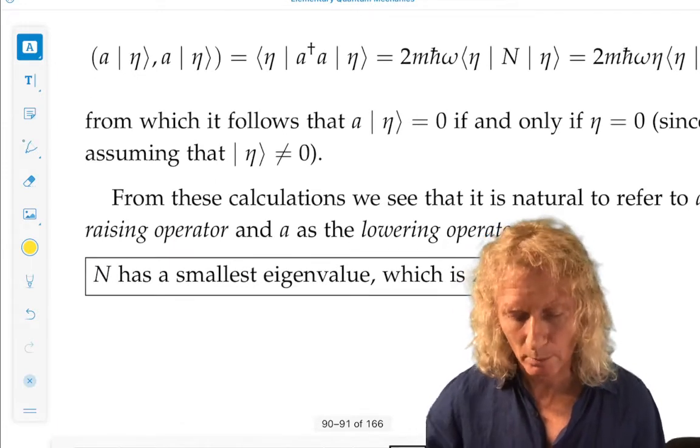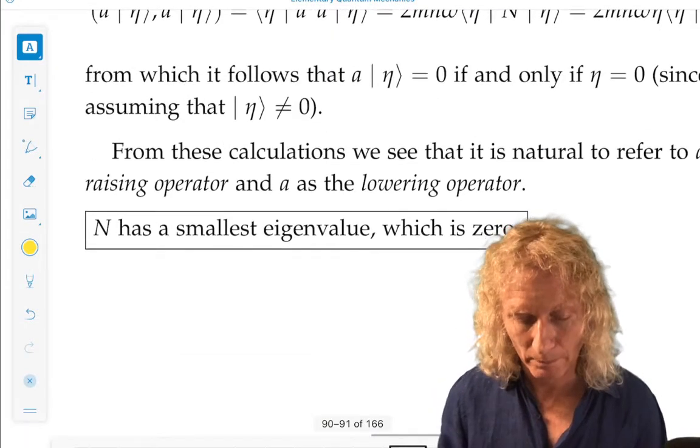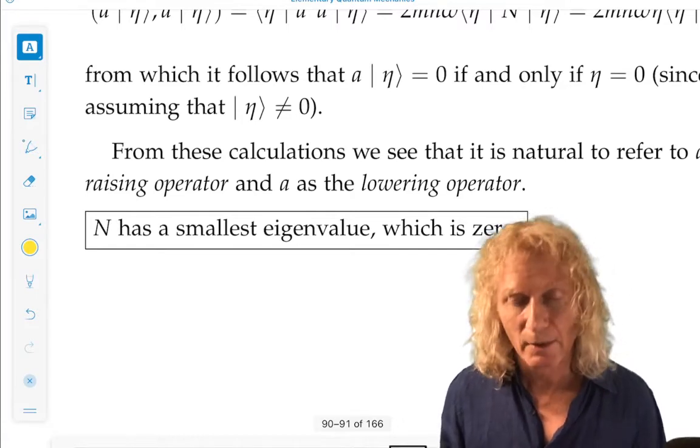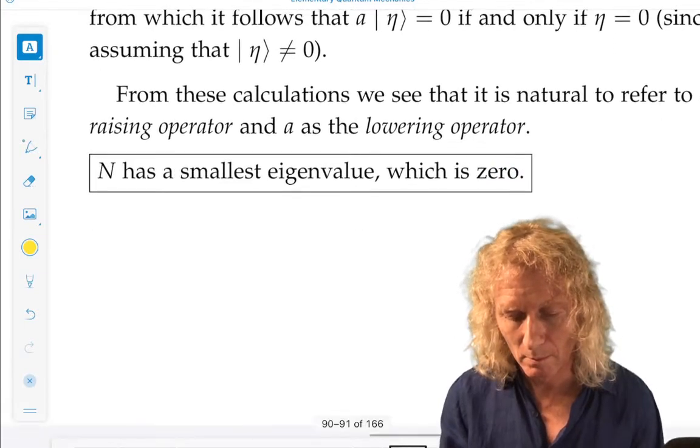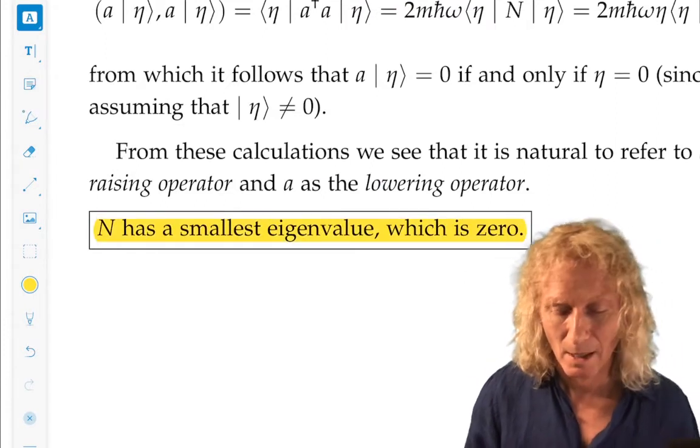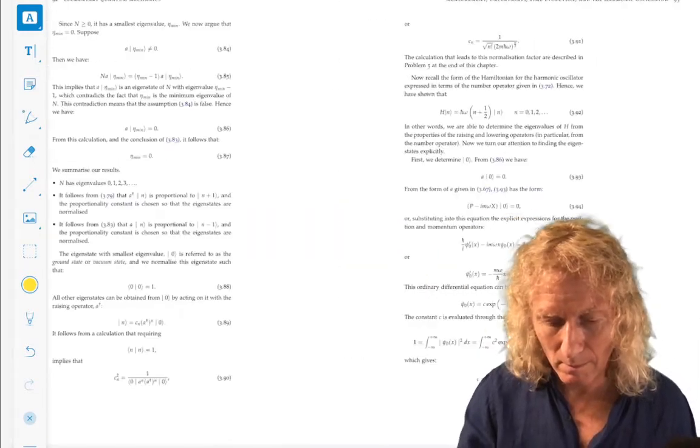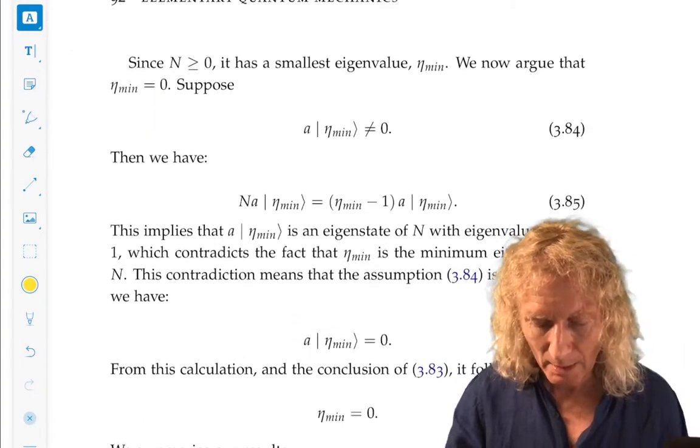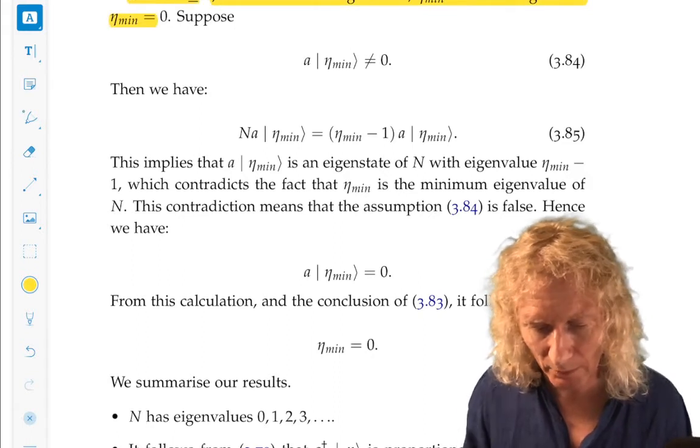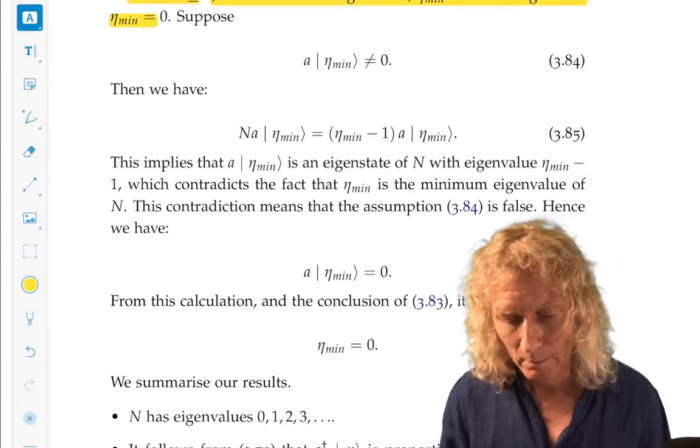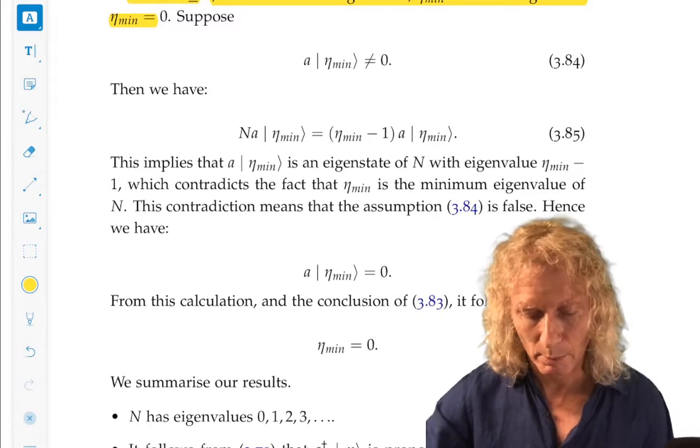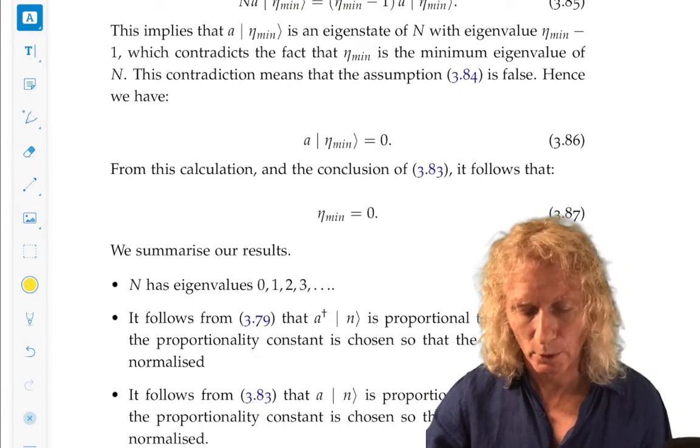Now, the last crucial piece, and then we have a nice story, is that the number operator, we know it's positive, it's greater than or equal to zero, but it has a smallest eigenvalue, which happens to be zero. That's a little proof by contradiction. We know, this is just repeating what I said. So we suppose it goes below zero, and we get a contradiction. But again, I will leave this little technical detail to you to fill out.